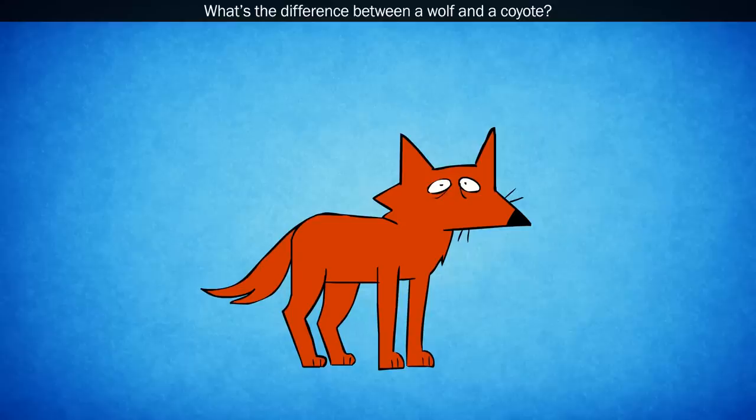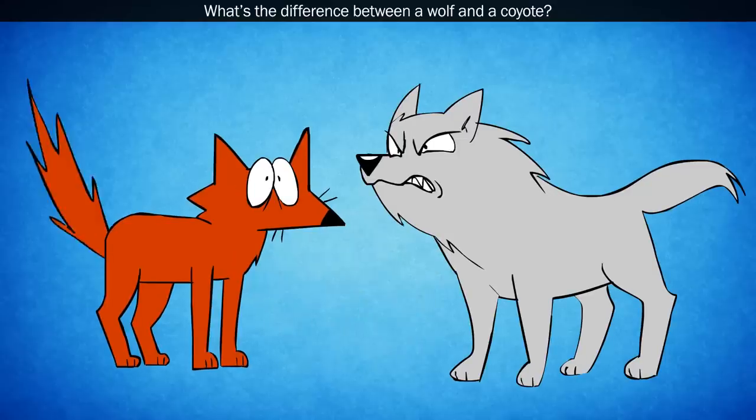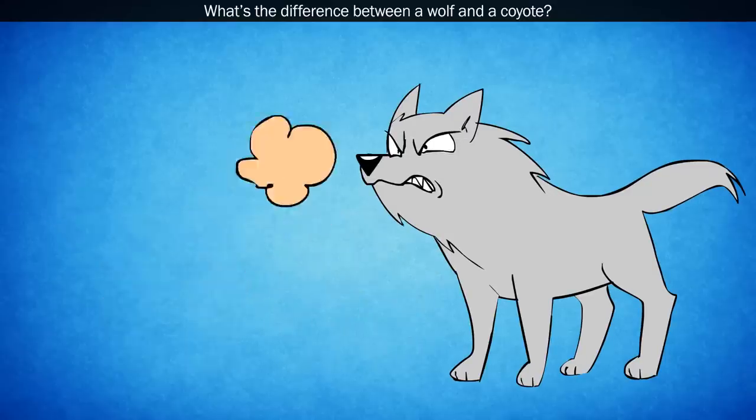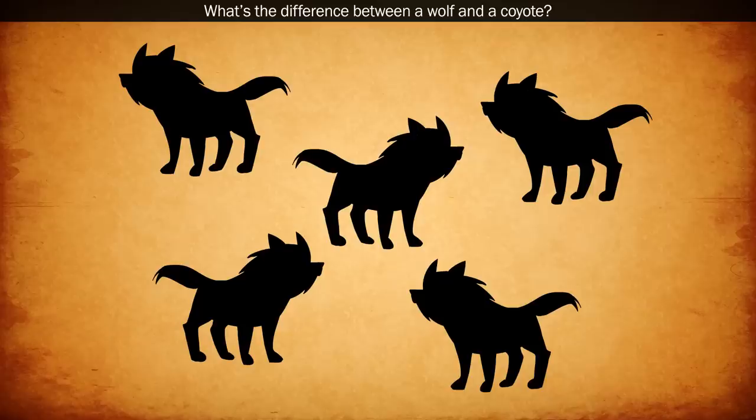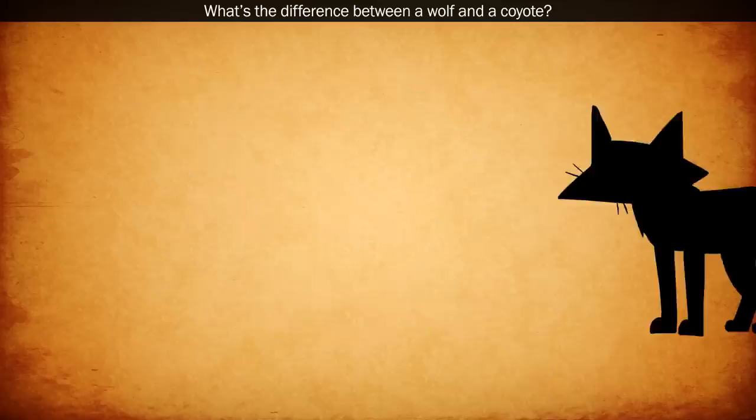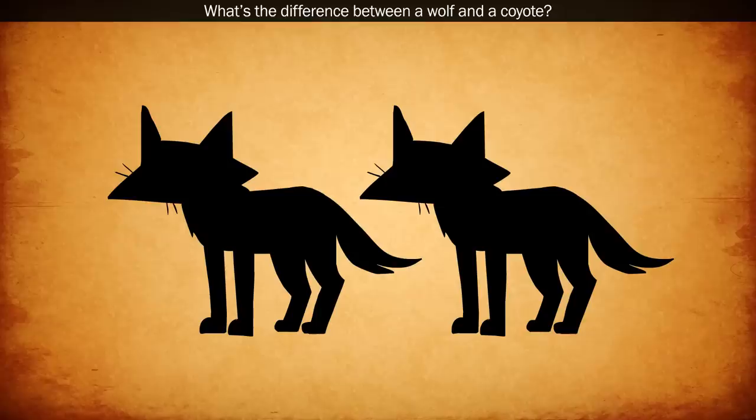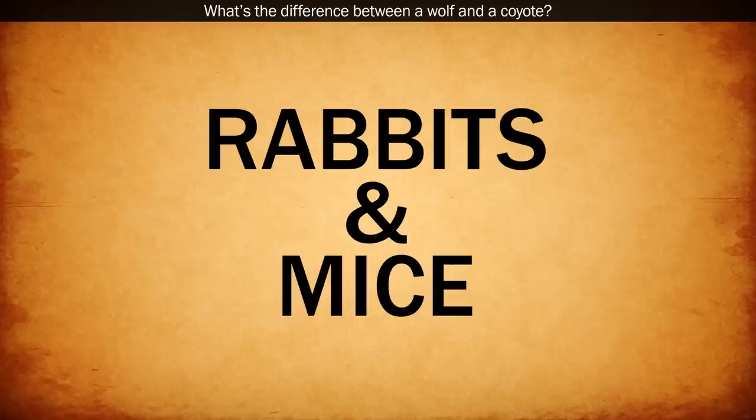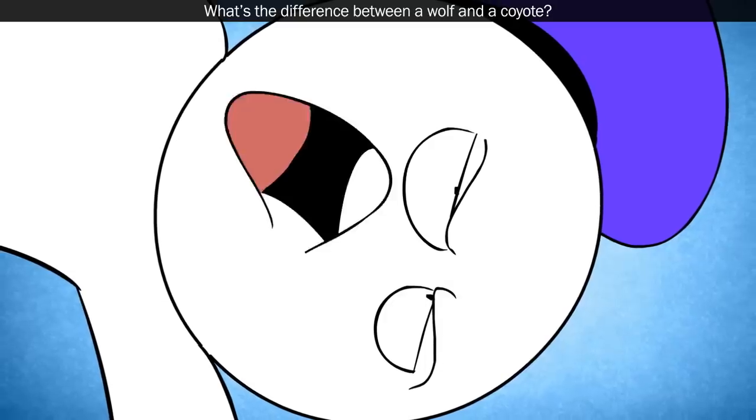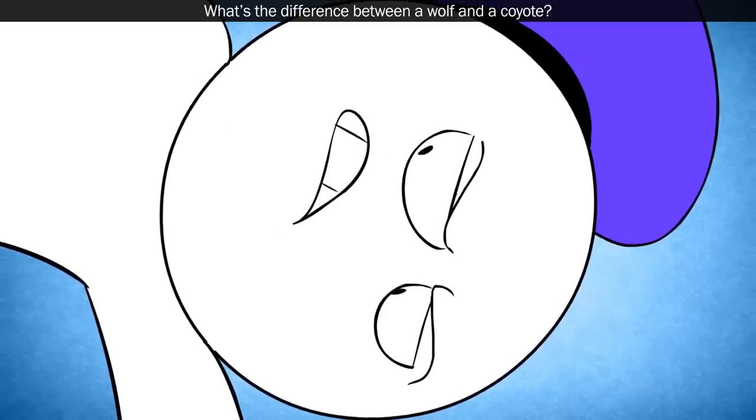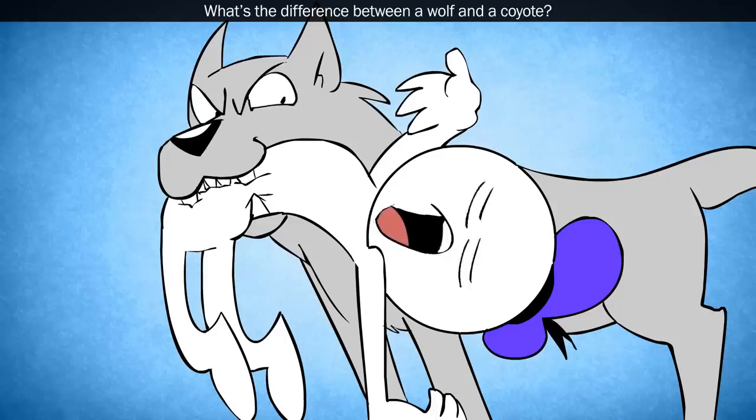Typically, coyotes are smaller than wolves and tend to have bushier tails, but they also behave differently. Wolves are pack hunters and prey on sheep, goats, and deer. Whereas coyotes often hunt in pairs and prey on smaller animals like rabbits and mice, coyotes also tend to be more shy around humans, far less likely to attack than wolves are.